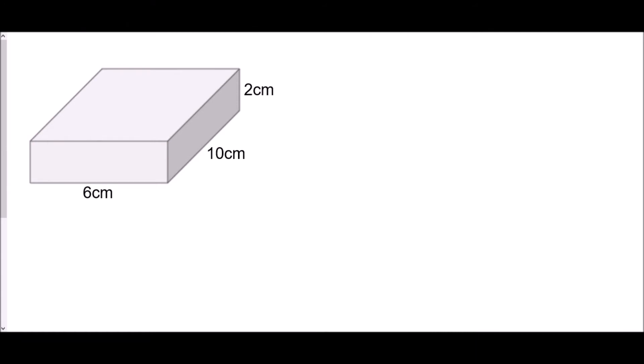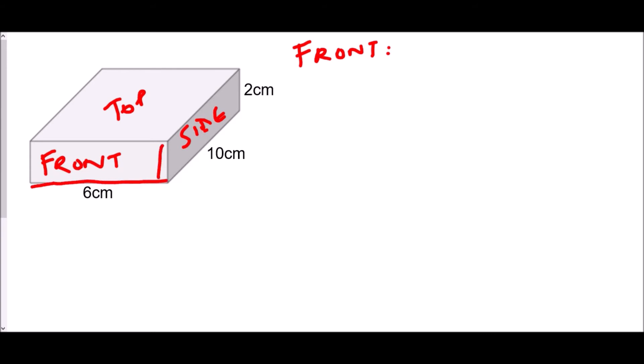In this last example, we'll work directly from the diagram without drawing separate face diagrams. I'll still label each side to keep track. The front rectangle is 6 cm across and 2 cm high, so 6 × 2 = 12 cm².